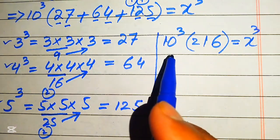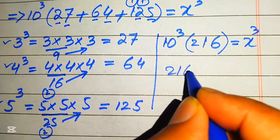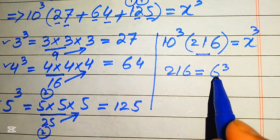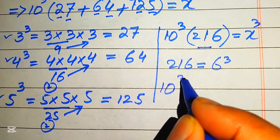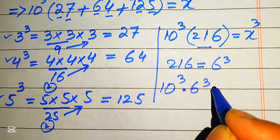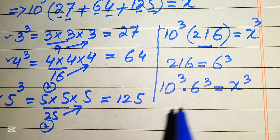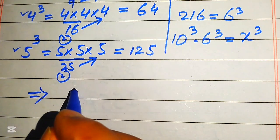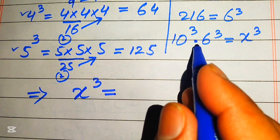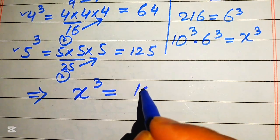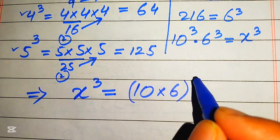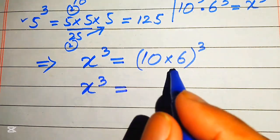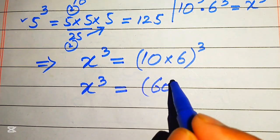We need to convert 216 into cubic form. We know that 216 equals 6 cubed. So we replace this to get 10 cubed multiplied by 6 cubed equals x cubed. Combining the cubes of these two values, we write x cubed equals 10 multiplied by 6, whole cubed, which gives x cubed equals 60 cubed.